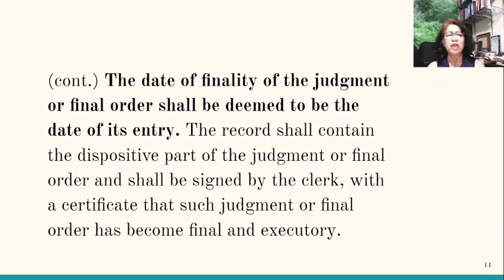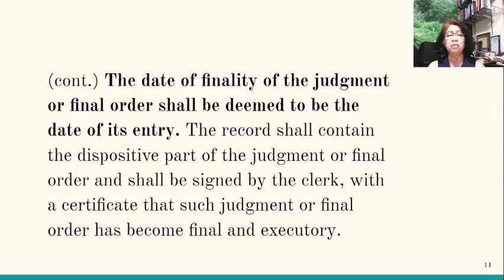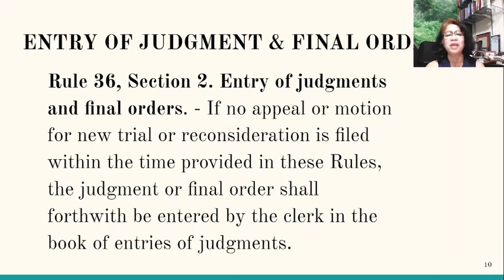The date of finality of judgment or final order shall be deemed the date of its entry. For example, if notice of the decision was received on April 15 by a party, the party has 15 days to file an appeal but did not. So after April 30 — after the 15th day — the decision shall become final, and that is the date of finality of the judgment, even if it was actually entered in the book of entries of judgments at a much later date. So to avoid confusion, the date of entry is always the date of finality of judgment.